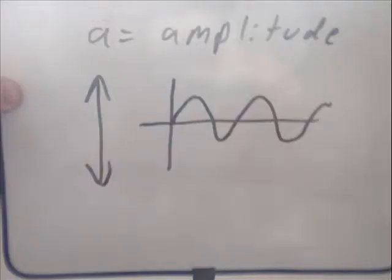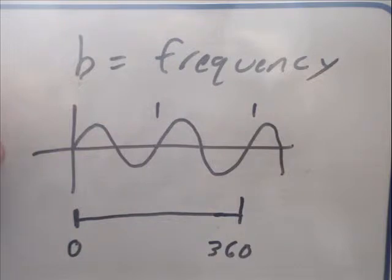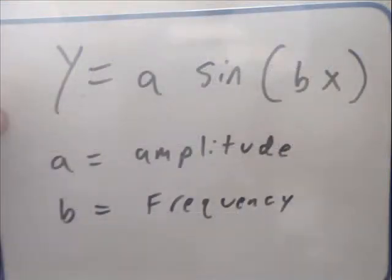So the first thing we want to do is calculate how high the slinky is or the diameter. That's the amplitude or A in the sine equation. Next we want to see how many times the slinky loops around on itself between zero and 360 degrees. That is the frequency or B in the sine equation. Here we see the sine equation, Y equals A sine B times X, where A is the amplitude and B is the frequency.